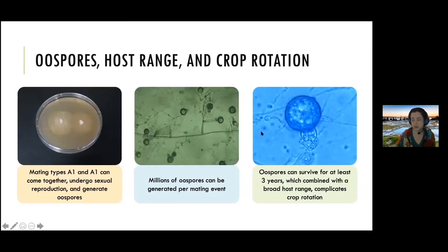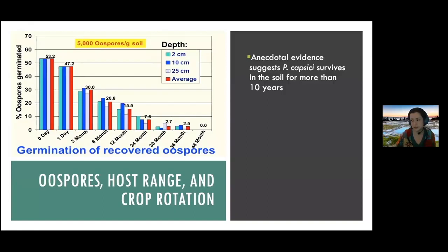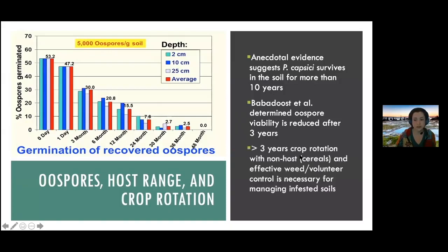This is what becomes a real problem with your field becoming infested. A researcher at University of Illinois, Dr. Mohamed Babadoost, made an experiment a few years ago to test how long oospores survive. His research determined that a three-year rotation seemed to be the magic number. If you are able to do a three-year rotation from non-hosts of P. capsici, that could really clean up your soil.